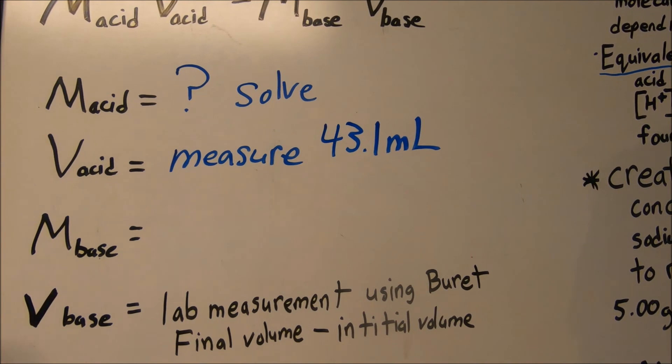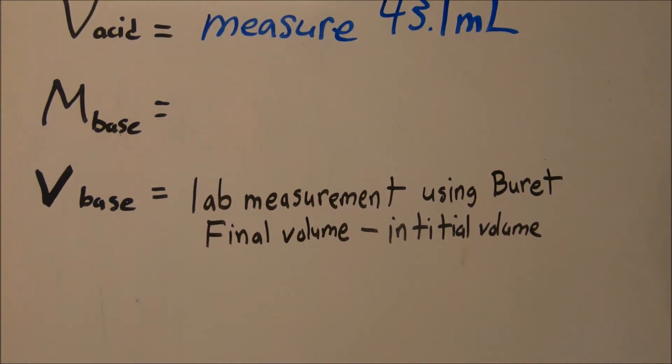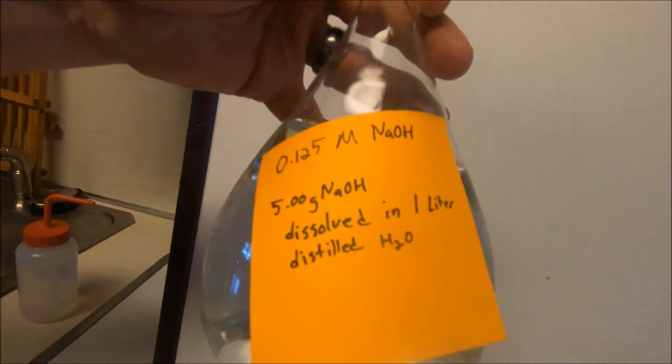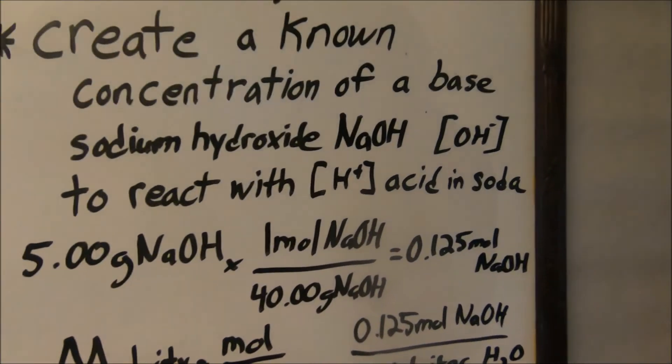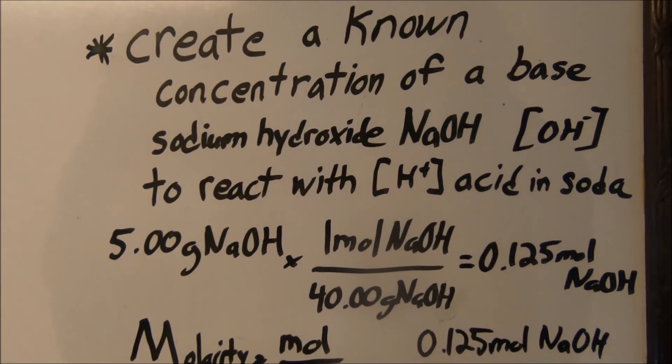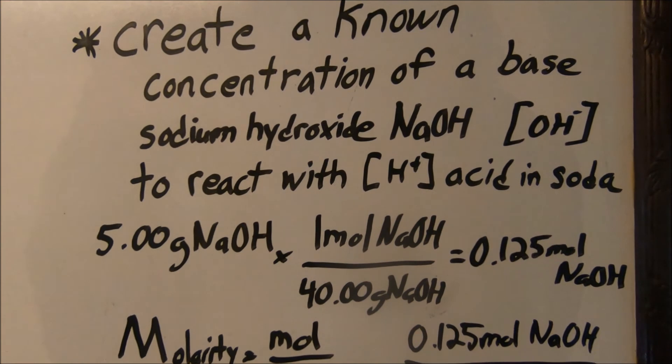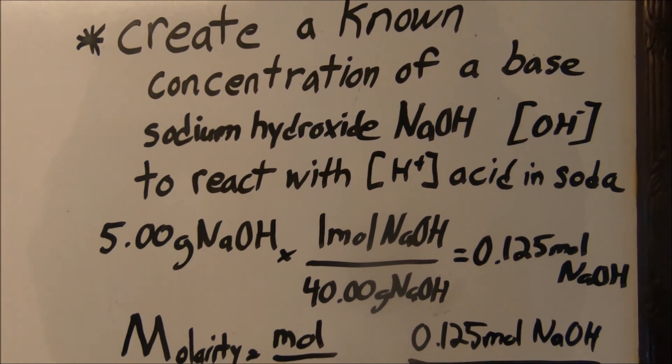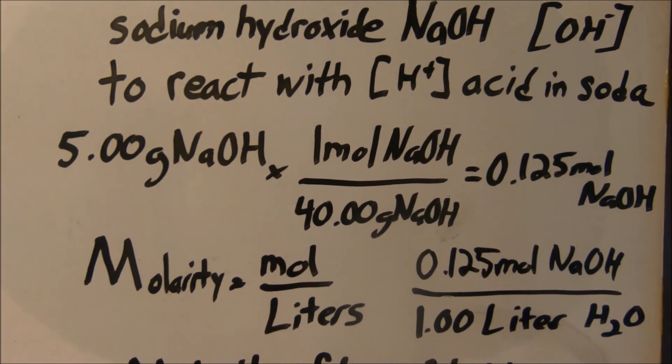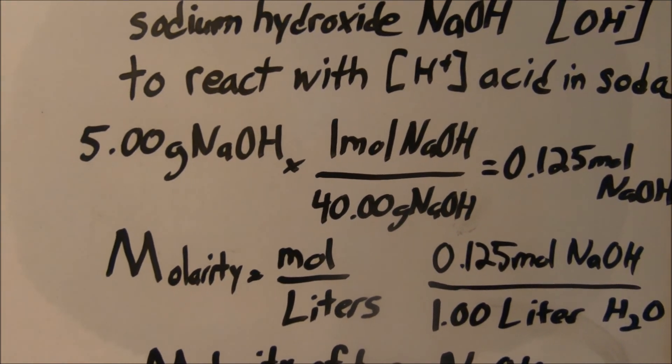Now our base, molarity for the base was pre-made ahead of time. We want a known concentration of the base. Sodium hydroxide, NaOH, is our strong base that will react with that soda. To make this today, five grams of NaOH were added, one mole NaOH over 40 grams per NaOH.